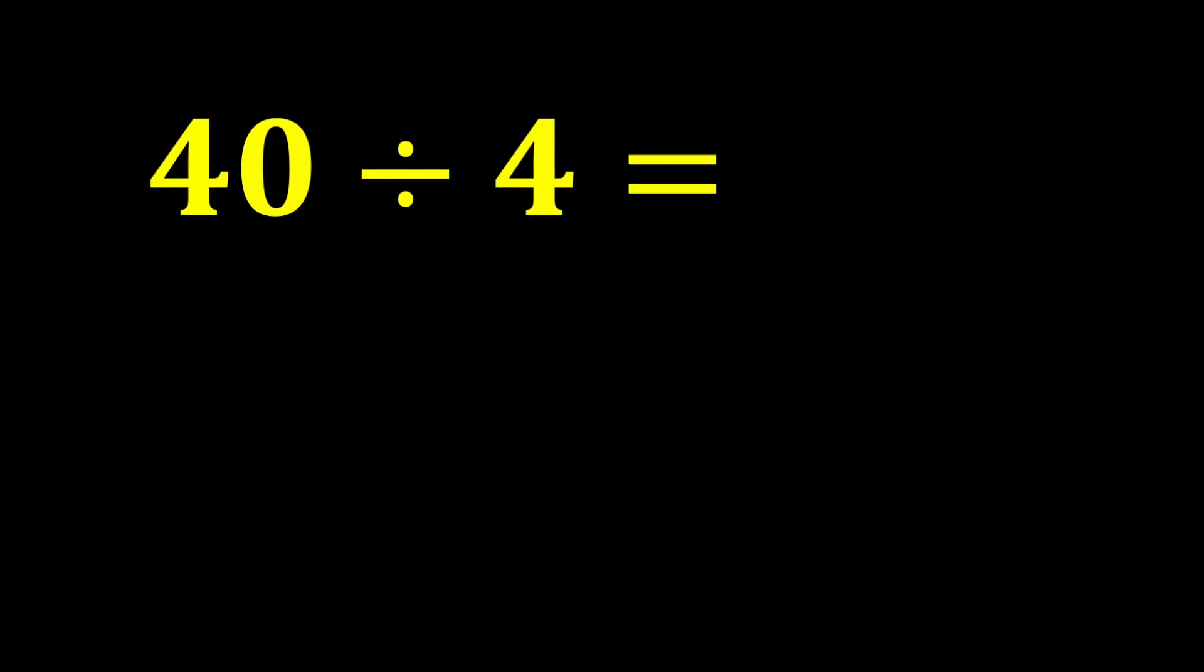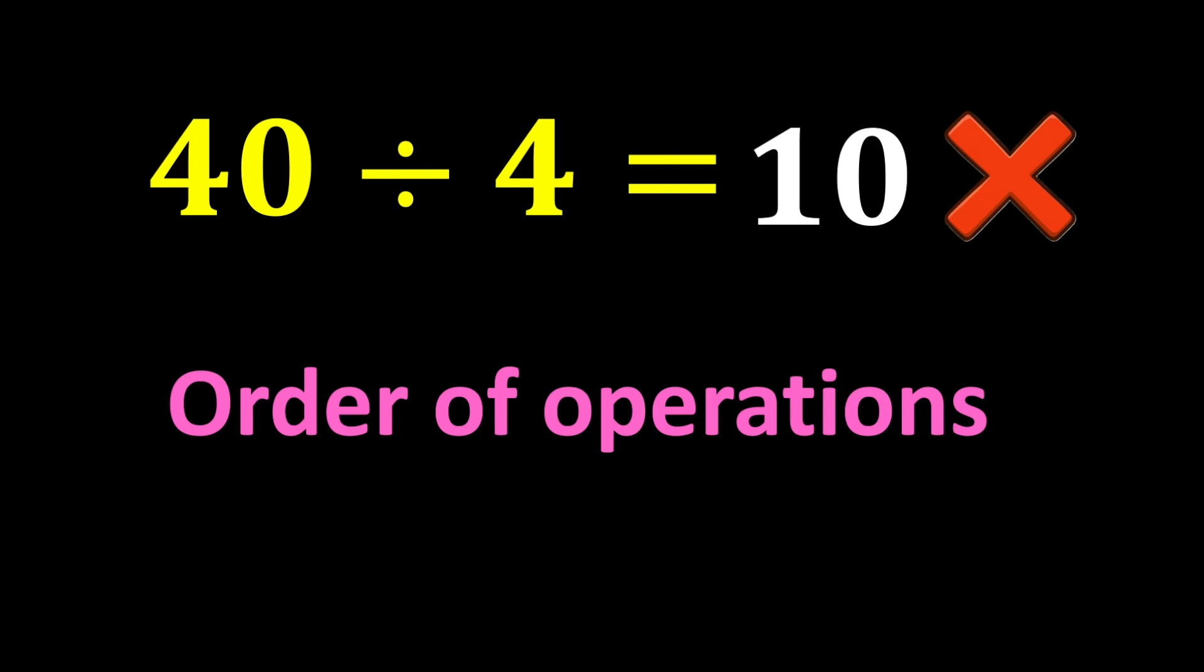In the end, 40 divided by 4 gives us 10, and our final answer is 10. But this answer is not correct because we did not follow one of the most important rules of mathematics. This rule is called the order of operations.